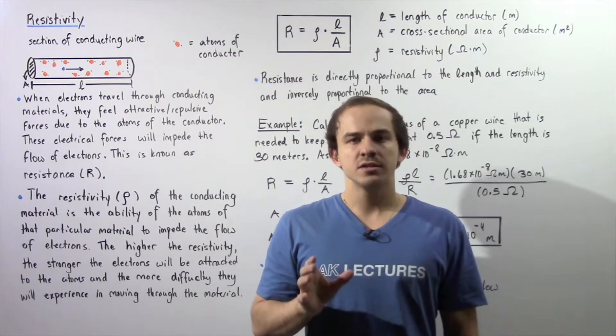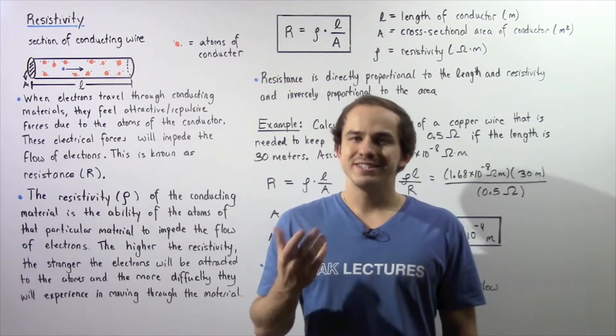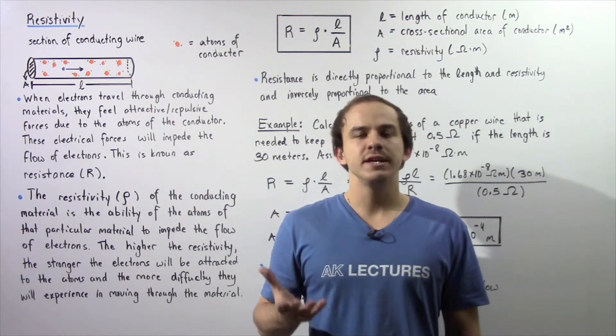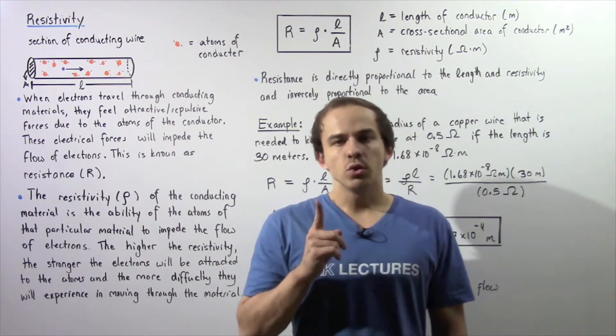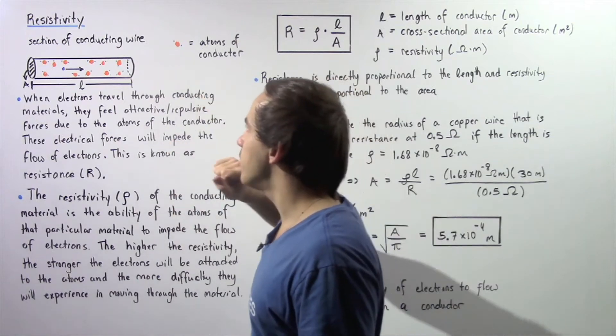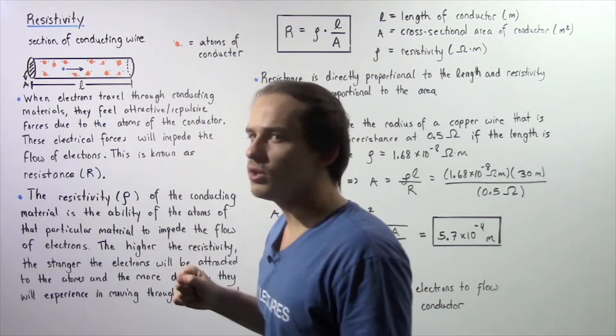In this lecture, we're going to discuss the relationship between resistance and resistivity of a conducting material. Let's begin by looking at the following diagram of a section of a conducting wire.